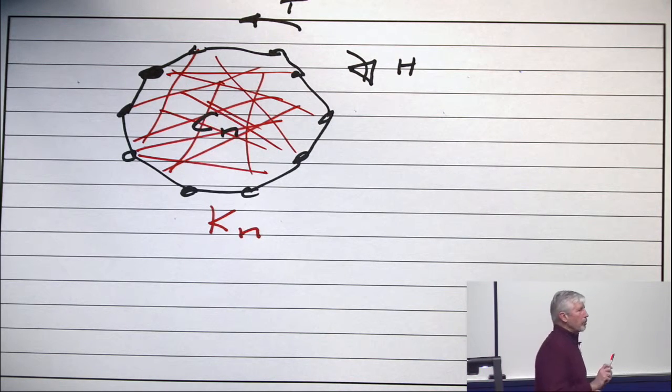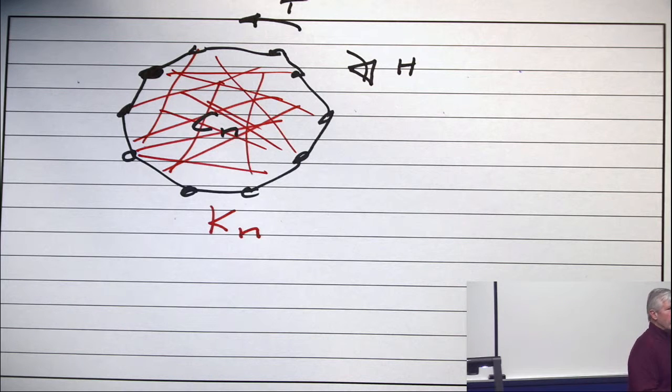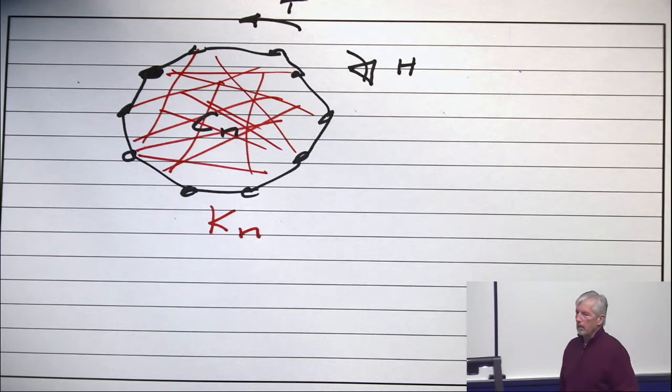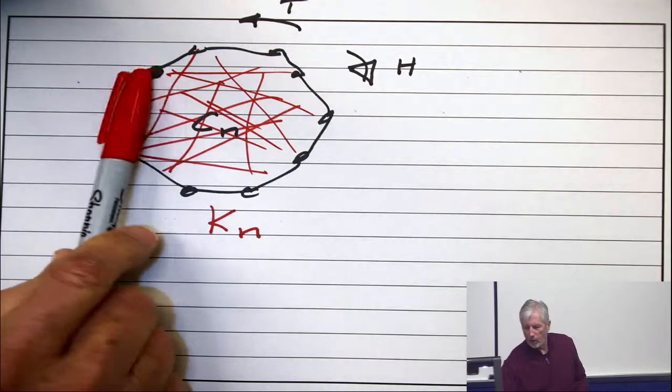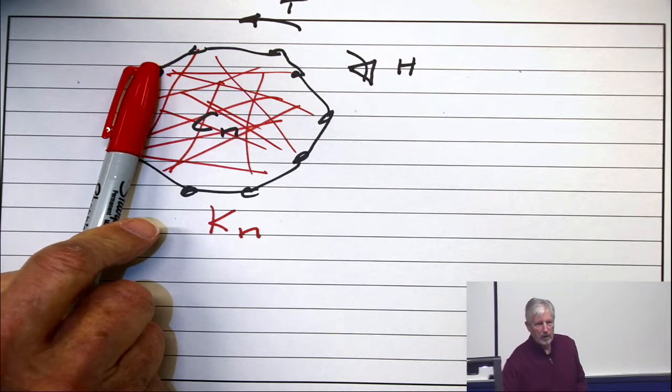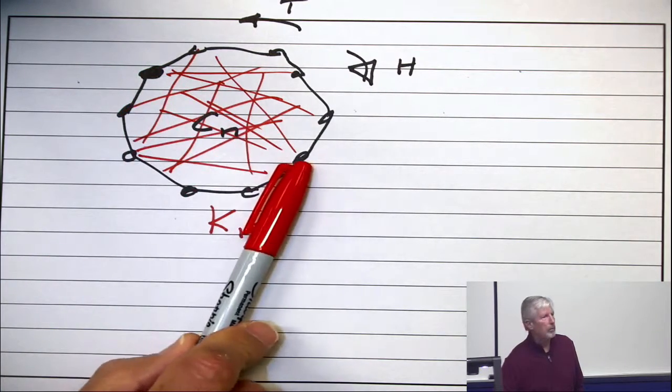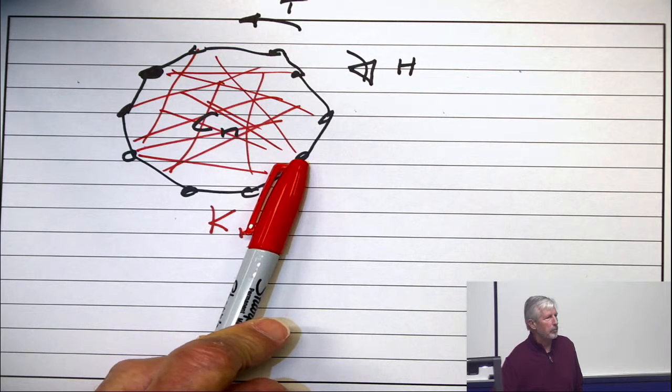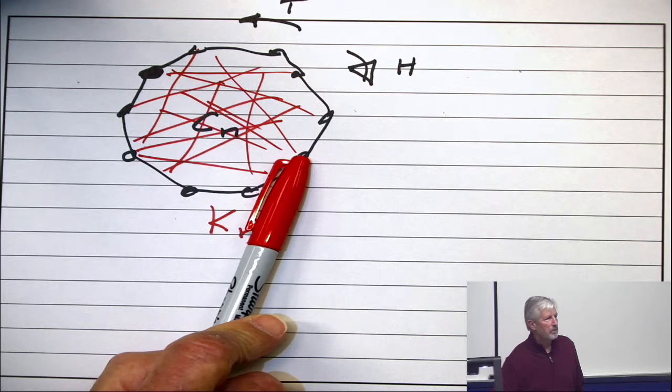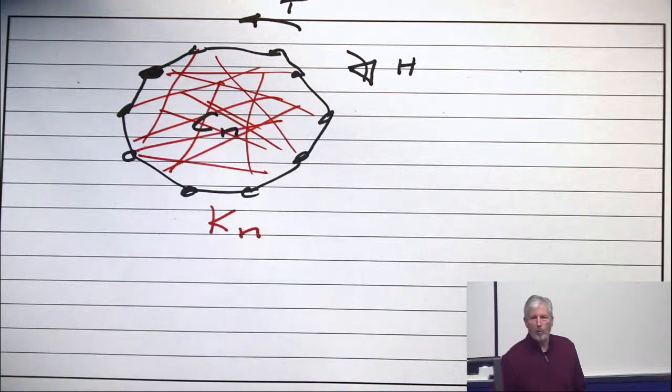Now, which of those two processes converges to the steady state distribution faster? The cycle or the complete graph? The complete graph. You've got more ways to get over there. You know, in the cycle, if N is a billion, it takes you at least a billion over two steps to get here. In a complete graph, you can get there with one step.